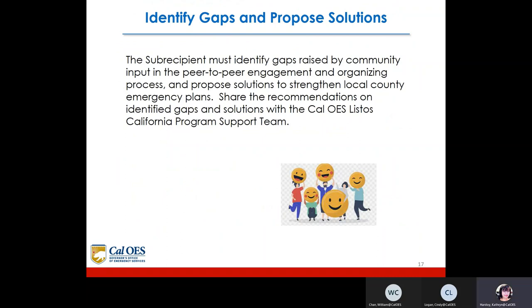To identify gaps and propose solutions, the subrecipient must identify gaps raised by the community through the peer-to-peer engagement and organizing process, and propose solutions to strengthen local community emergency plans. They must share recommendations on identified gaps and solutions with the Cal OES Listos California Program Support Team.